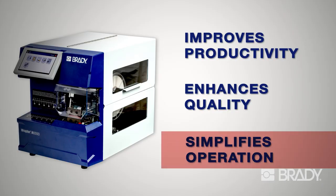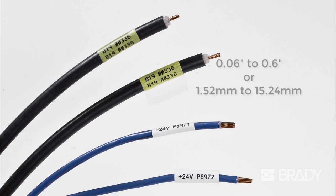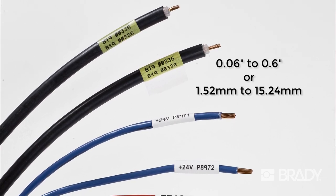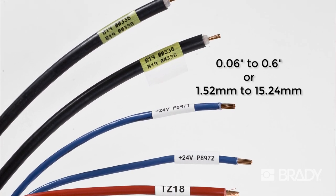With its self-adjusting wrapping mechanism, it can identify wires from 0.06 inches to 0.6 inches diameter without mechanical adjustments.